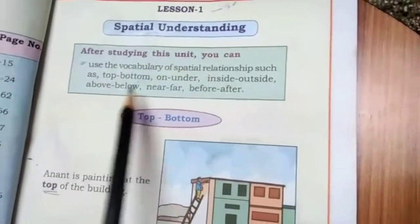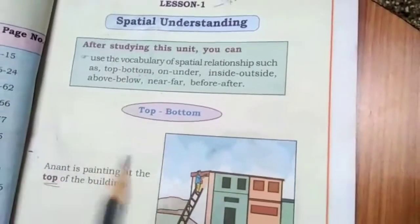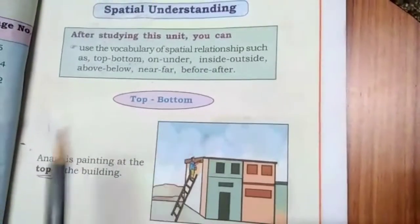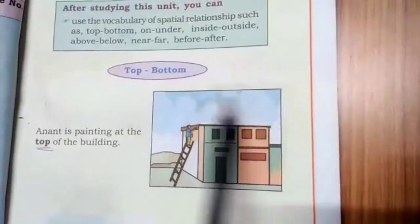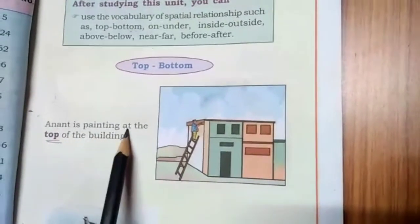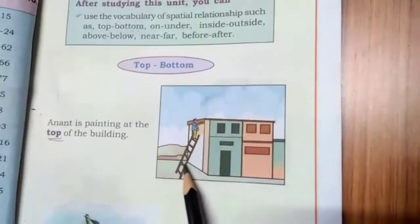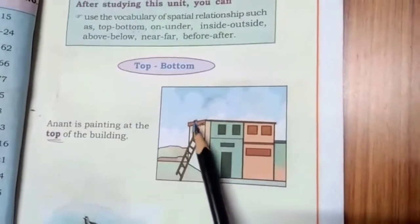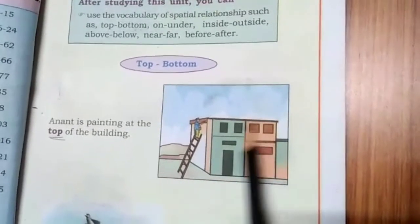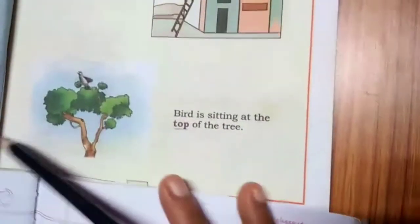Let's learn about top and bottom. There is a picture here — Anant is painting at the top of the building. So where is Anant? Anant is at the top of the building. This is the top of the building.